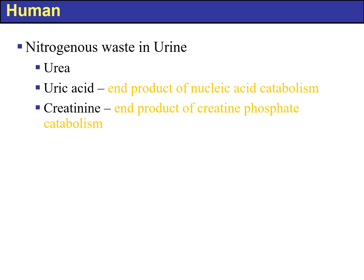The nitrogenous waste in urine in humans contains urea, uric acid — which is the end product of nucleic acid catabolism — and creatinine, which is the end product of creatine phosphate catabolism.